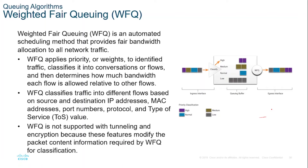Weighted Fair Queuing or WFQ is an automated scheduling method that provides fair bandwidth allocation to all network traffic. WFQ does not allow classification options to be configured, and WFQ applies priority or weights to identify traffic and classifies it into conversations or flows, as you can see in the figure. WFQ then determines how much bandwidth each flow is allowed relative to other flows. The flow-based algorithm used by WFQ simultaneously schedules interactive traffic to the front of a queue to reduce the response time.